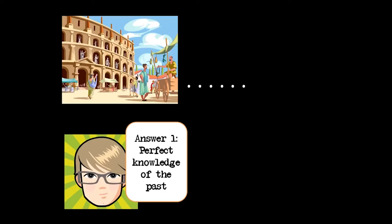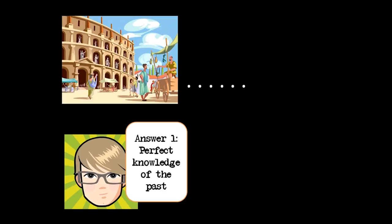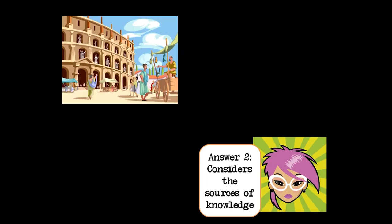Before we talk about historiography, we have to ask ourselves: what is history? Well, it seems like there could be at least two main kinds of answers. First, we could say history is the perfect knowledge of the past — like here's ancient Rome, and as time goes on it gets to me and I can say I know what happened in ancient Rome. I can have this perfect clear view of how things used to be. Well, that's a little too simplistic.